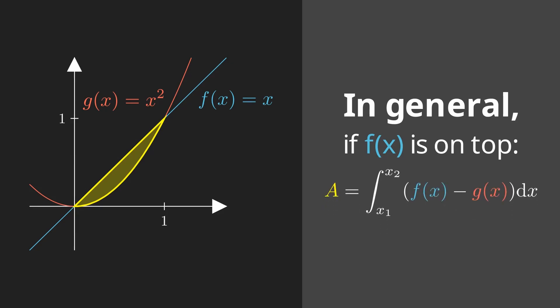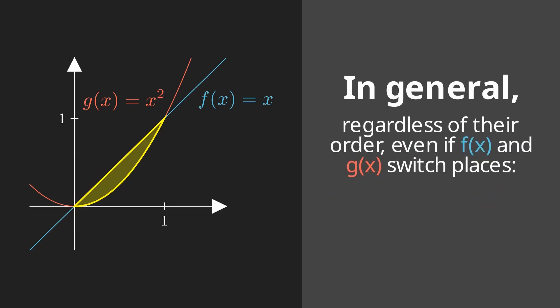So if f of x is the top function, then this is how the order will go, and vice versa. If g of x is on top, then g of x will be the original difference. However, if you want a general form, then you can simply take the absolute value of their differences, and you will get the same answer.